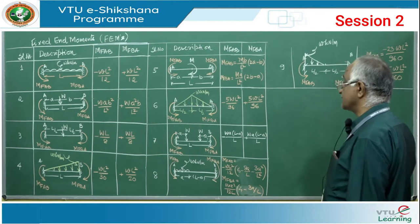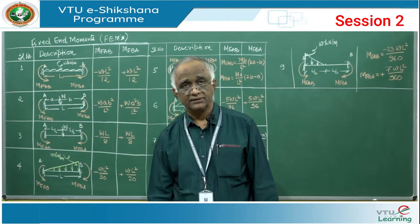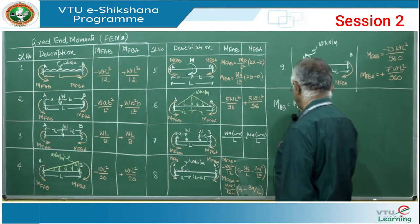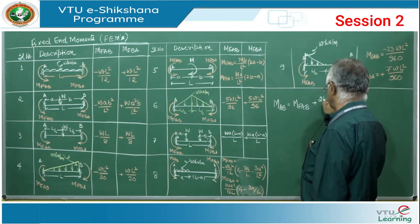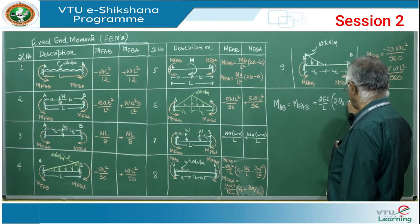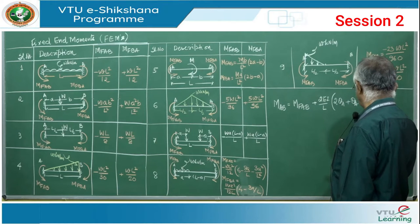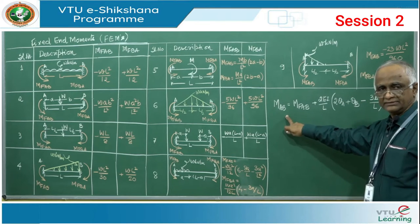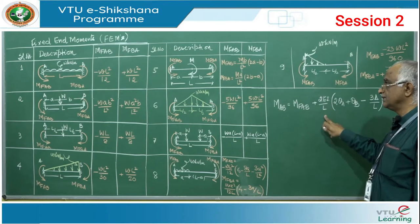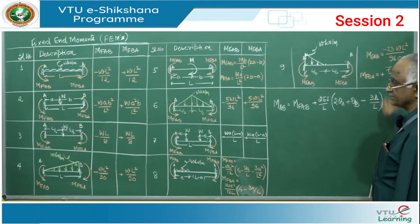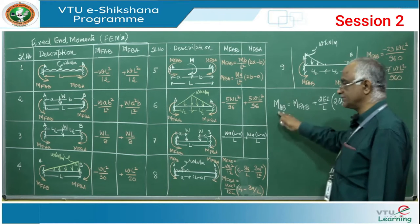Good morning. Yesterday we derived the slope deflection equation. Let me repeat it here: M_AB equals M_FAB plus 2EI/L times (2θ_A plus θ_B minus 3Δ/L), where M_FAB is the fixed-end moment, θ_A and θ_B are slopes at the near and far ends, and Δ is the relative displacement due to differential settlement of supports.